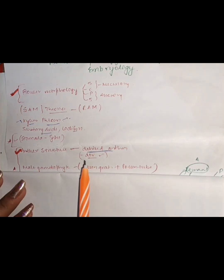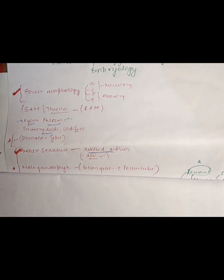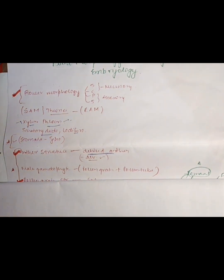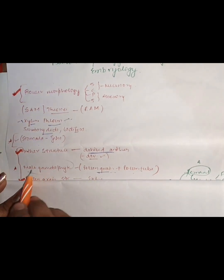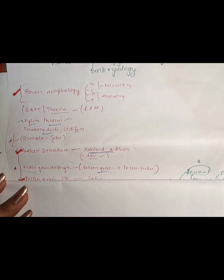How does anther development happen? I have uploaded a video. When anther development is complete, it forms the pollen grain. The pollen grain is the male gametophyte. When the pollen grain develops a pollen tube, the pollen grain structure along with the pollen tube is called the male gametophyte. This is an important topic — you should know about the male gametophyte.